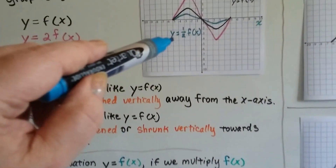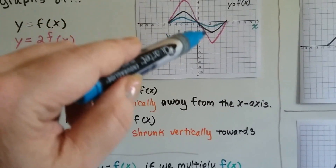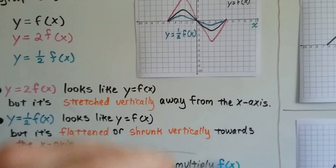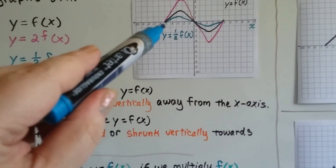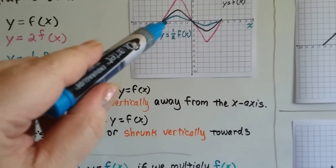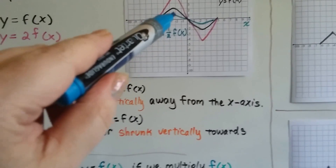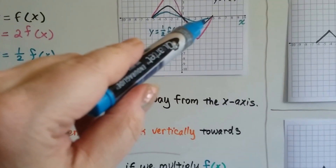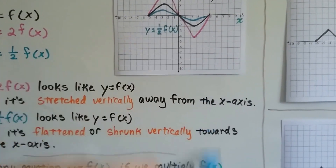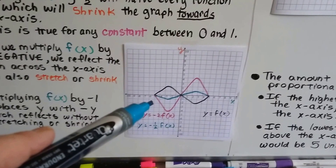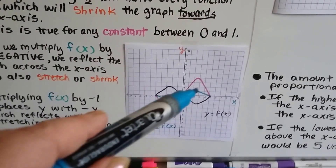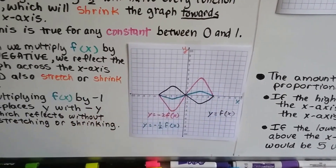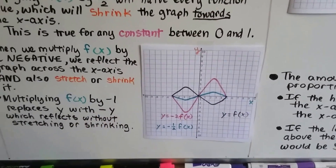This one went up, and then the pink one went down. And even this blue one went up and then down below the x-axis.